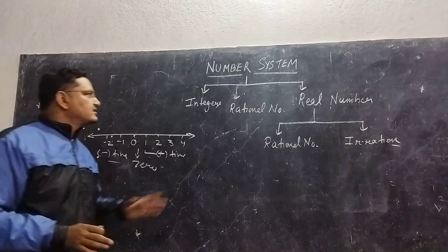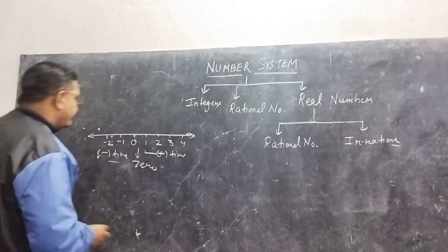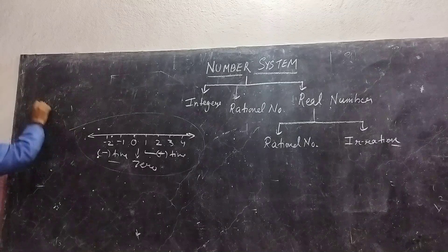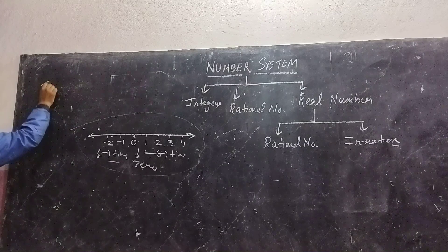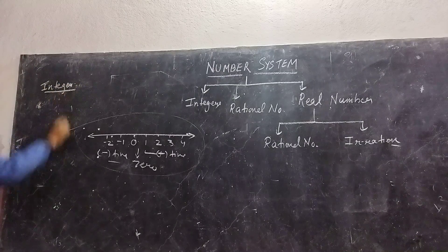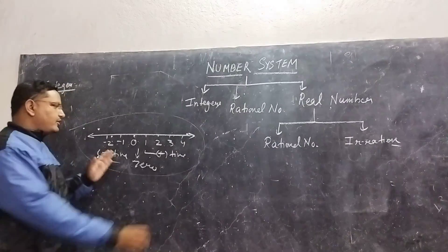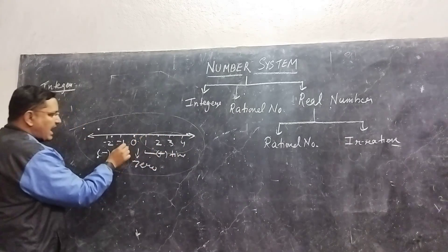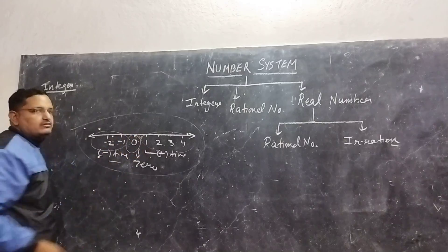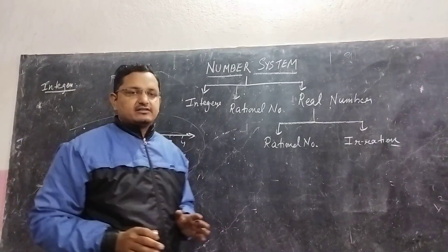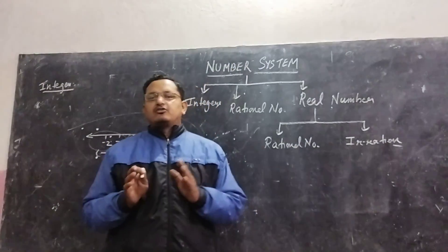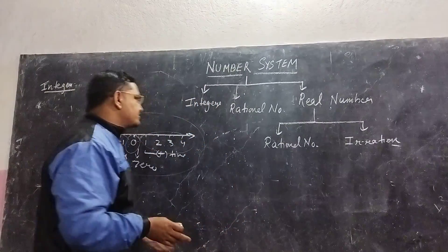Integers is the first topic of the class 7 chapter. From this number line, how do we define integers? Integers can be defined as: a set of all positive and negative numbers including zero is called integers.